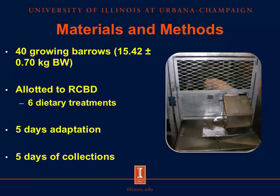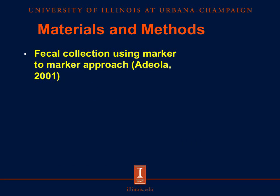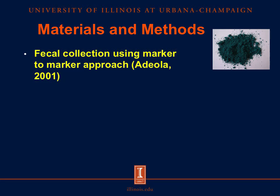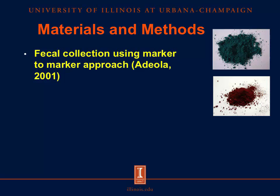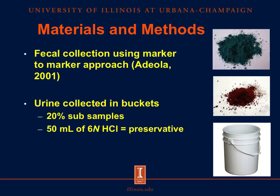They were provided five days to adapt to their diets and environments. Following the adaptation, total urine and feces were collected for five days. Total feces were collected using the marker-to-marker approach. On day six of the experiment, indigo carmine was added to the morning diet to indicate the ingested material. Then, on day 11 of the experiment, ferric oxide was added to the morning meal to indicate the ending of collection. Total urine volume was also reported. A 20% subsample was collected, mixed, and then subsampled. At the beginning of each daily collection period, 50 mL of 6 normal HCl was added to the urine pail and used as a preservative.